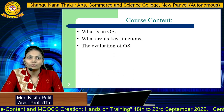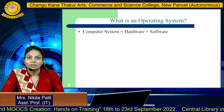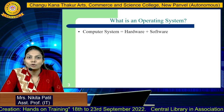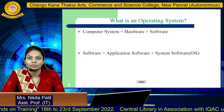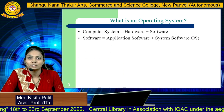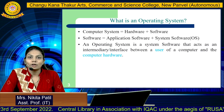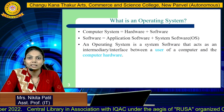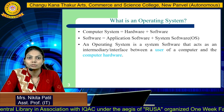First, what is an operating system? We have to see what is a computer system. The computer system is the combination of hardware plus software. Software is application software plus system software. So an operating system is a system software that acts as an intermediary or interface between the users of a computer and the computer hardware.